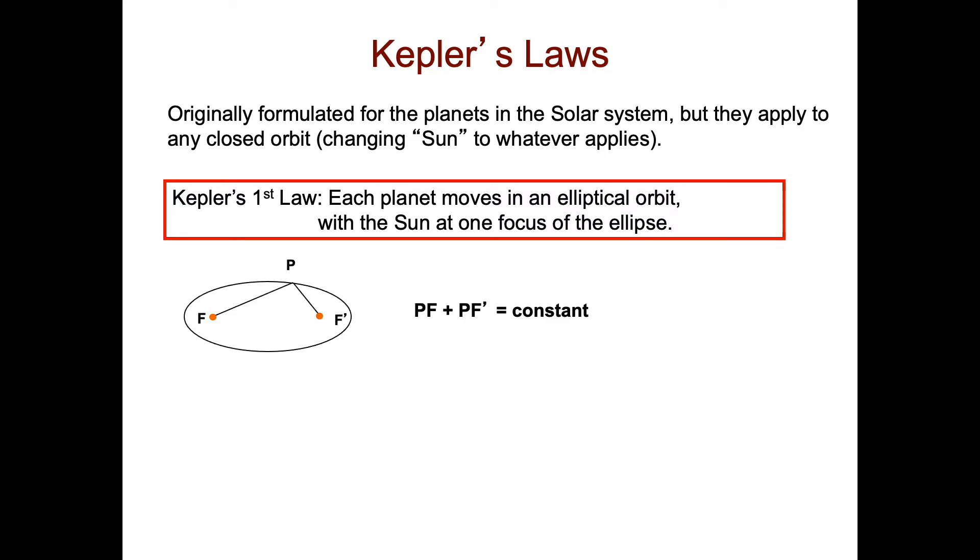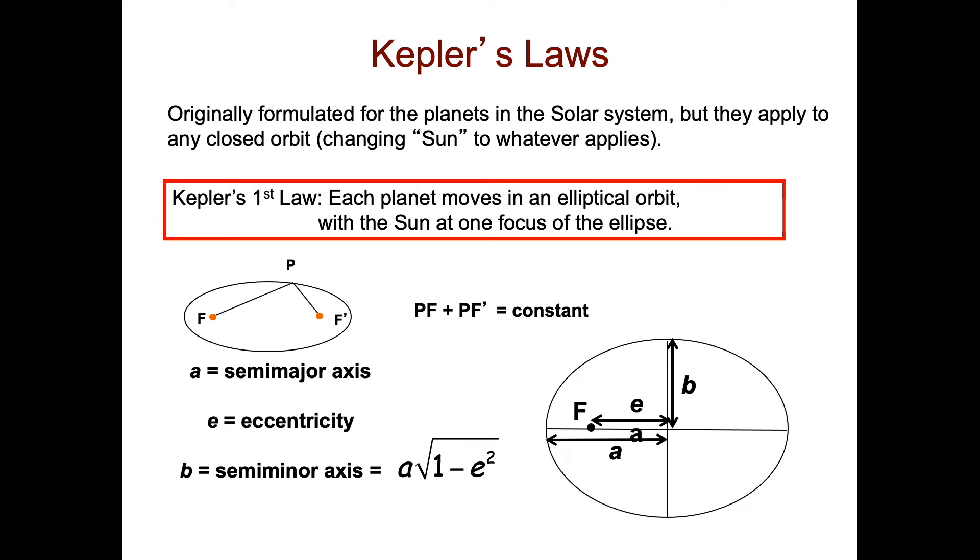For those who are not familiar with an ellipse, one way to make an ellipse is to take a loop of string with two focal points. At any point along the ellipse, your distance from one focal point plus your distance from the other stays constant. So PF plus PF prime equals constant. As you move those focal points closer together, eventually you'll converge to a circle. A circle is a special case of an ellipse.